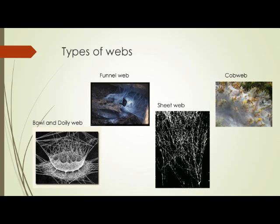Although we are most familiar with the orb web, spiders make various types of webs. One of these is the bowl and dolly type, which resembles a bowl on a crochet doily — something many of you may have seen at your grandparents' house.